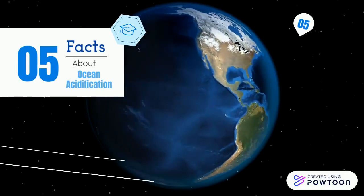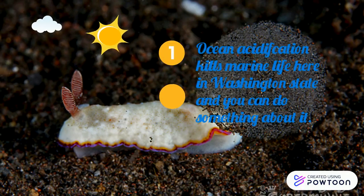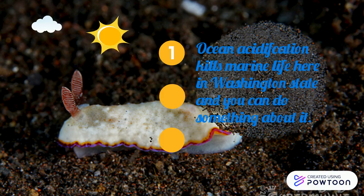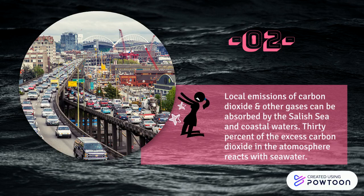Ocean acidification kills marine life here in Washington State, and you can do something about it. Local emissions of carbon dioxide and other gases can be absorbed by the Salish Sea and coastal waters. 30% of the excess carbon dioxide in the atmosphere reacts with seawater.